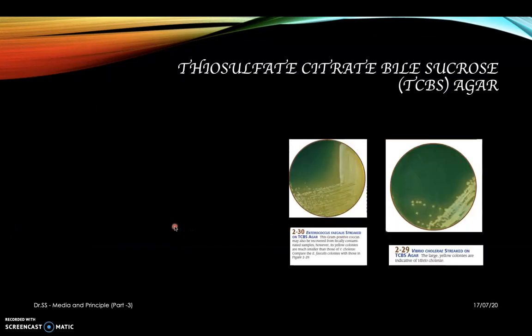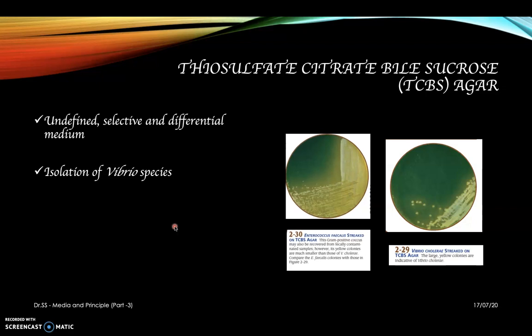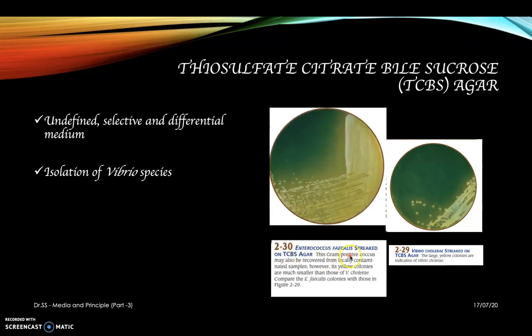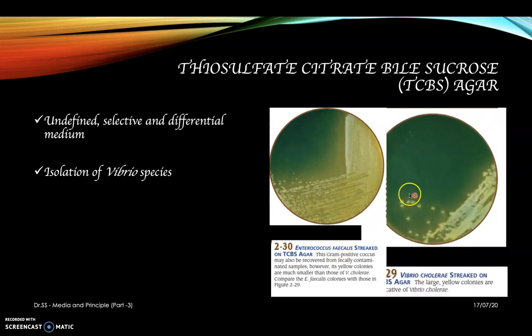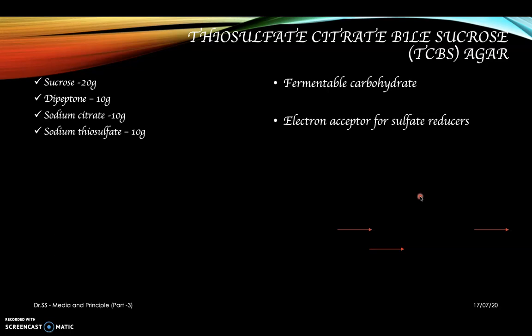Thiosulfate citrate bile sucrose agar — TCBS agar — is an undefined selective and differential medium mainly for the isolation of Vibrio species. When you think of Vibrio species, the first medium to think of is TCBS agar. Two types of colonies are shown: Vibrio cholerae produces very large yellow colonies, while Enterococcus faecalis colonies are much smaller by comparison. Compositions include sucrose as a fermentable carbohydrate, dipeptone, sodium citrate, and sodium thiosulfate which acts as an electron acceptor for sulfate reducers.